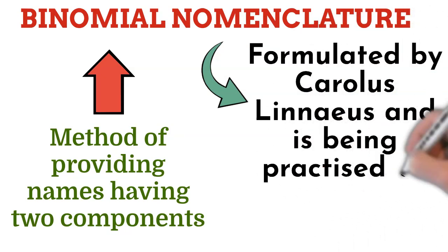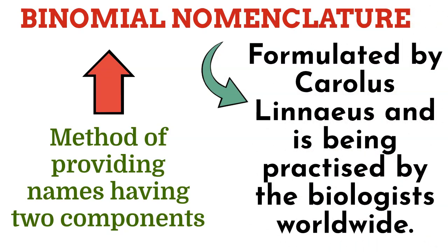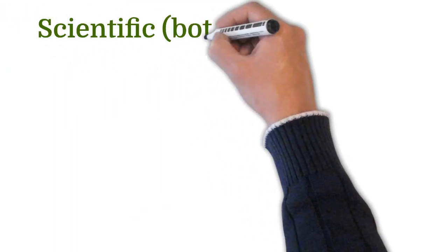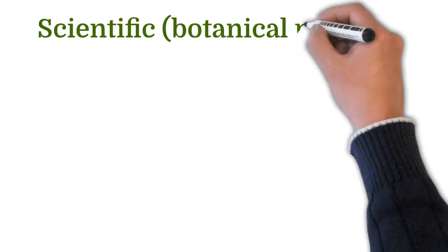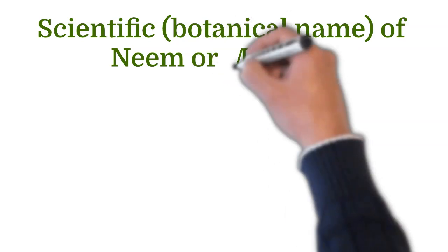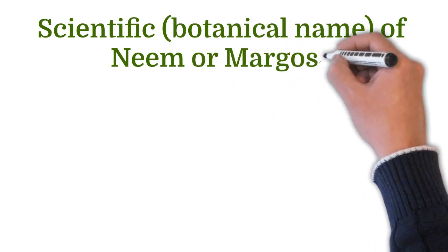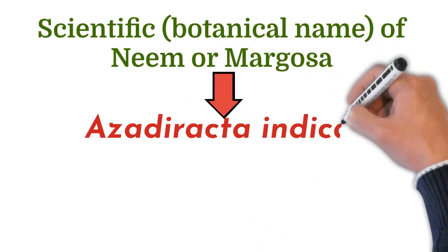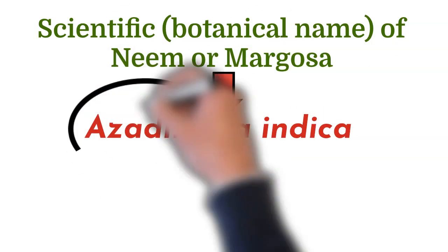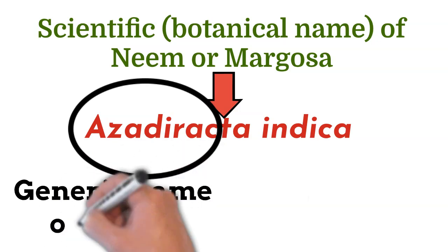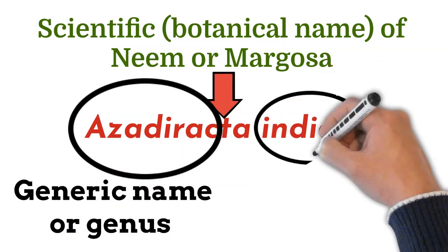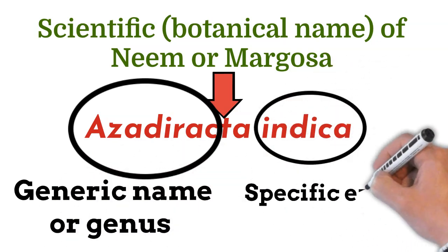This method of naming is practiced by biologists worldwide. For example, the scientific or botanical name of neem or margosa is Azadirachta indica. Here, Azadirachta is the generic name or genus, and indica is the specific epithet or species.